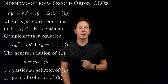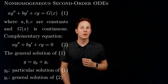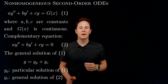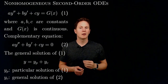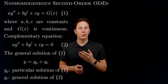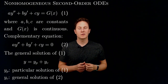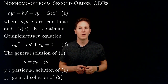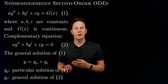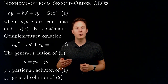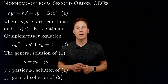The theorem is true because if we have any two solutions of the non-homogeneous equation, then their difference will be a solution of the complementary equation, and so it will be of the form y sub c with some coefficients c1 and c2. Therefore, any one solution is of the form any other solution plus y sub c.